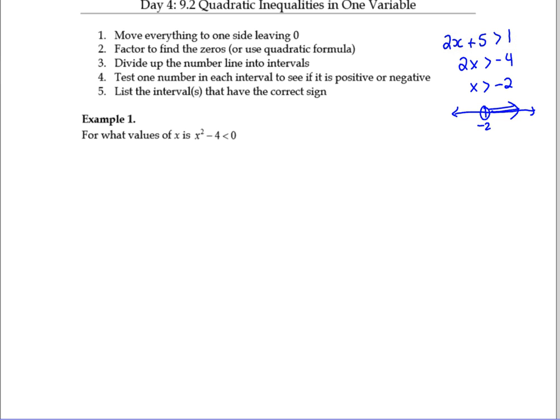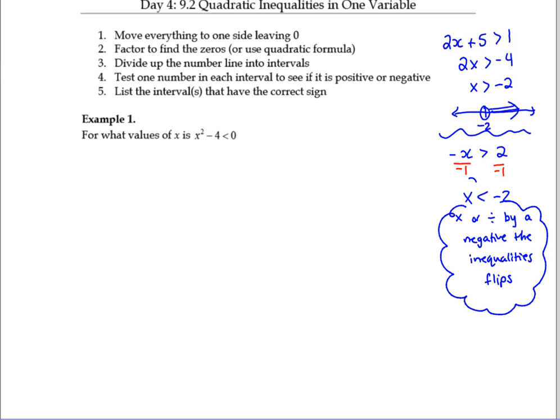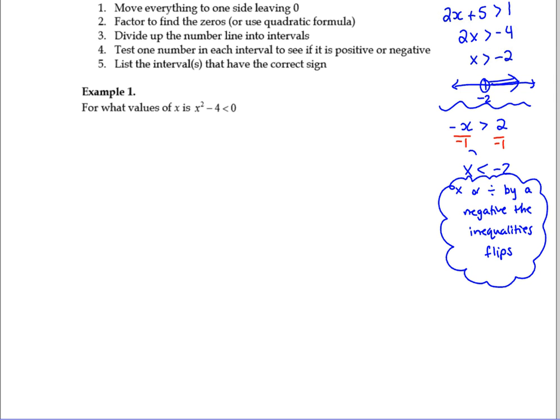A couple of things you need to remember. If you divide by a negative, if I had, when is negative x greater than 2? What happens to the inequality if you divide or multiply by a negative? It changes direction. Yeah, it flips. So if you multiply or divide by a negative, the inequality flips. It changes directions. Whenever you multiply or divide by a negative, the inequality will flip. That's important to remember. It's rare, but it might come up.